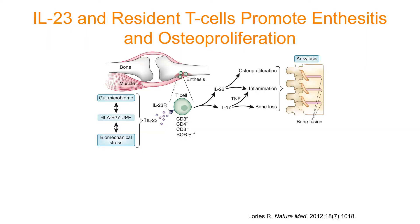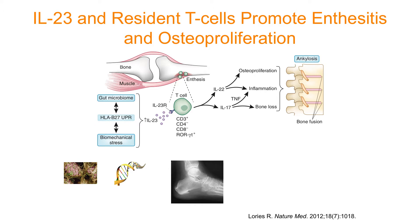We're now more focused on the area of enthesitis — where the tendon meets the bone — as an area of active interest. Something stimulates it, whether it's genetics, protein misfolding, biomechanical stress, or the gut microbiome and dysbiosis, which you heard about this morning. All of these stimulate IL-23, which then causes the osteoproliferative, inflammatory, and bone loss changes we see in this disease.